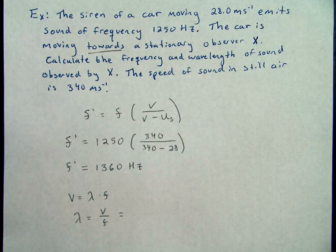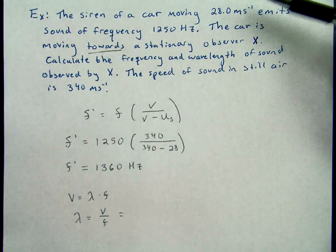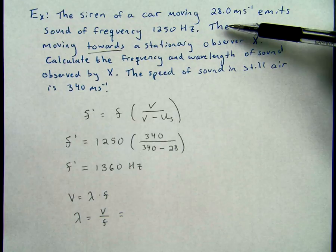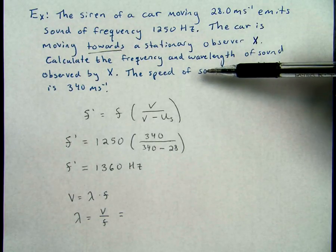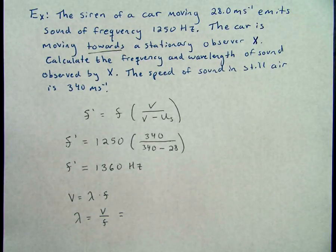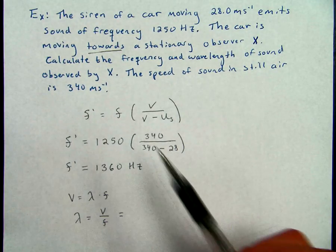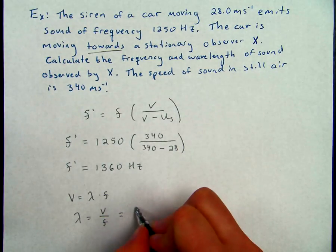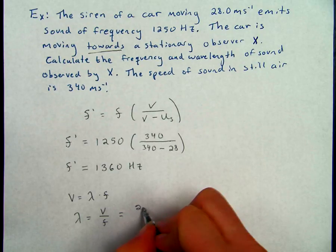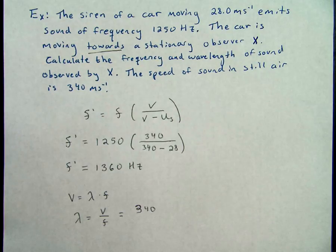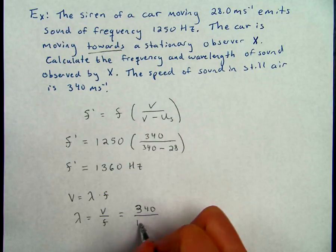Now the question I have a lot of students ask is, which velocity do I use? Do I use the 28 that the car is moving or do I use the speed of sound in air? Well, if you think about it for a second, we really want the speed of sound because that is what our wave is traveling through. We're traveling through air. So we want 340 meters per second over this calculated frequency that we observed.